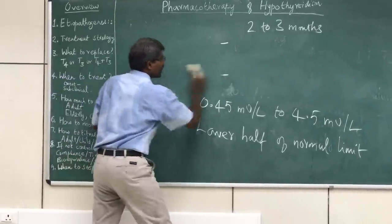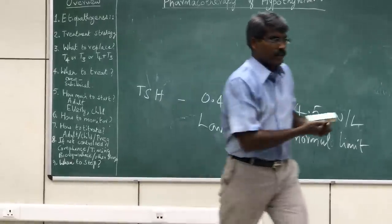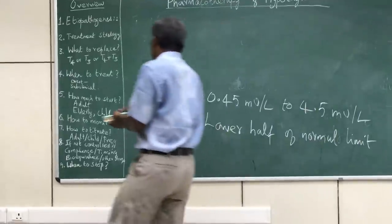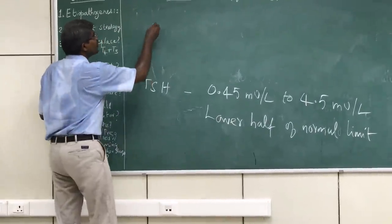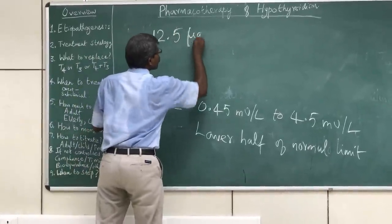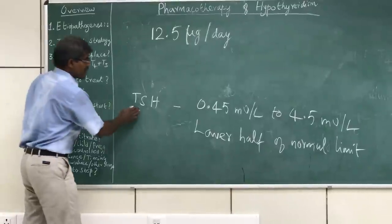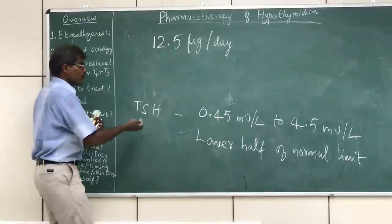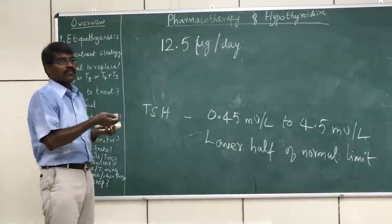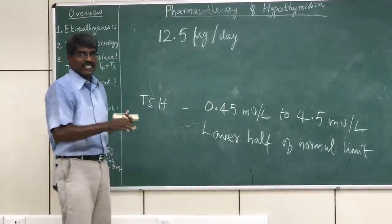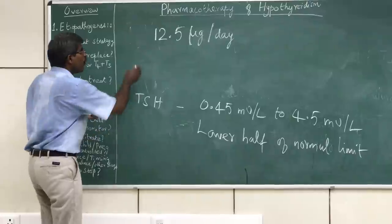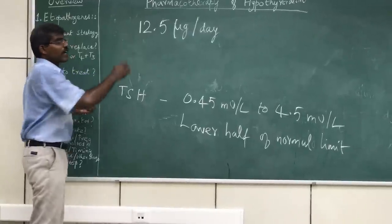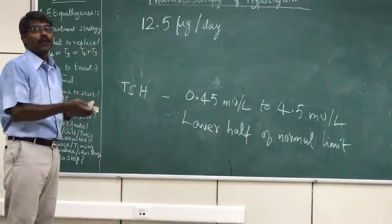Titration of dose is done in increments of 12.5 micrograms per day. Once you check the TSH level, if the lower-half target is not attained — if TSH is high, increase the dose of levothyroxine; if TSH is low, reduce the dose. Either increments or decrements are made in the magnitude of 12.5 micrograms per day. After changing the dose, again give a time period of 2 to 3 months before re-testing.